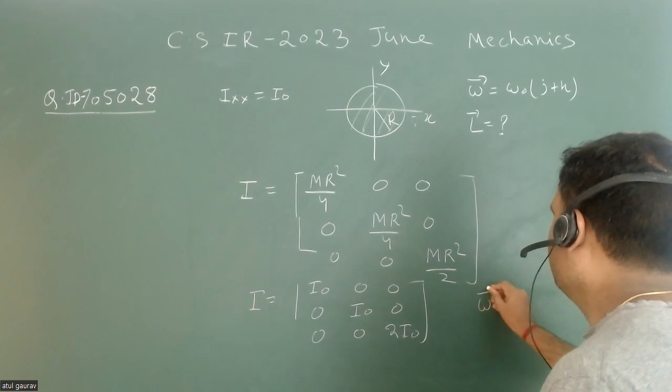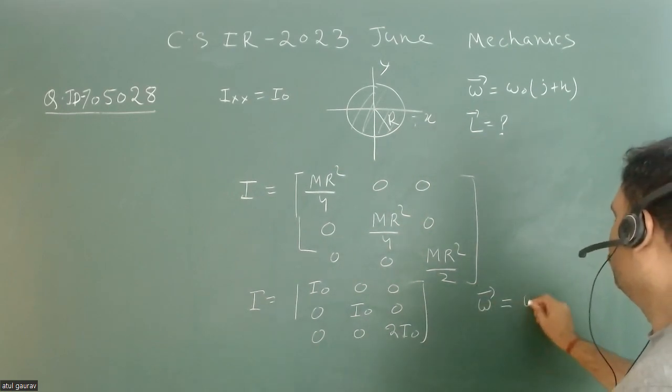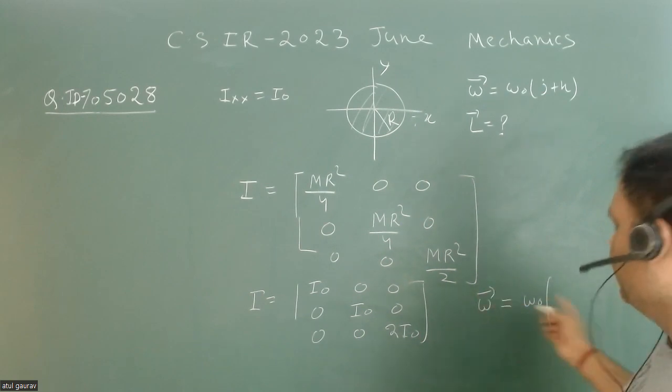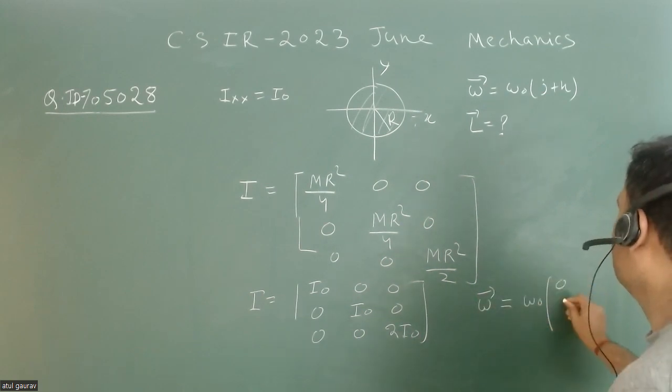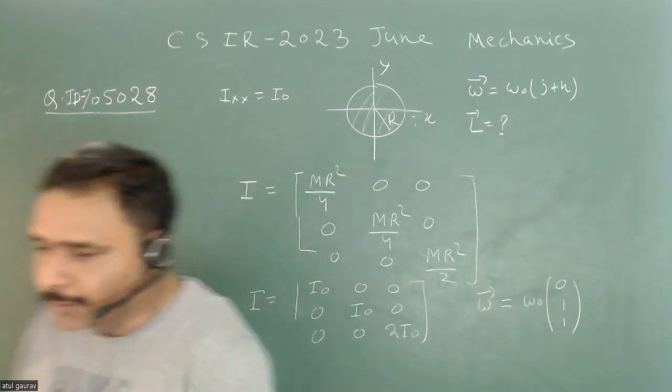What is your angular velocity? The angular velocity is given as ω₀, and I can write it in column vector form as [0, 1, 1]. This will be my angular velocity.